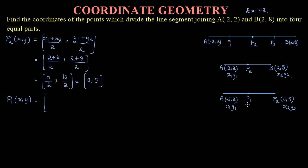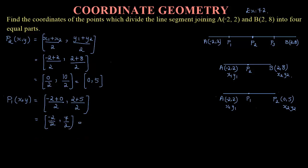Substituting: (−2 plus 0) divided by 2, comma (2 plus 5) divided by 2. Any number added with 0 remains the same, so we get −2 divided by 2, comma 7 divided by 2. That gives −1, comma 7/2. So the coordinate of P1 is (−1, 7/2). Note that the 2s cancel — do not write 0; it is −2 divided by 2 which equals −1.